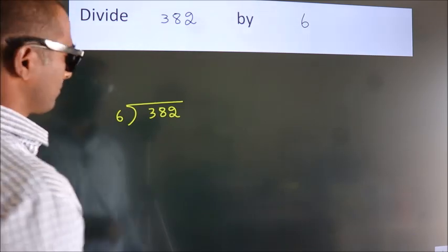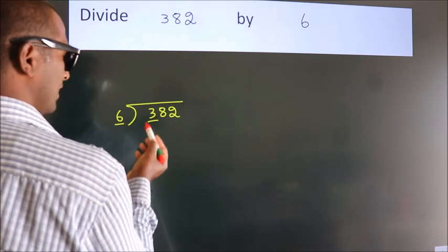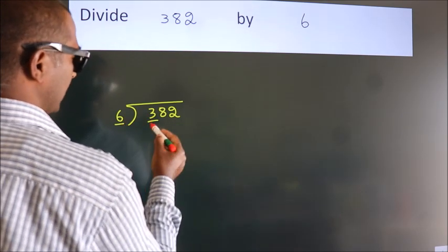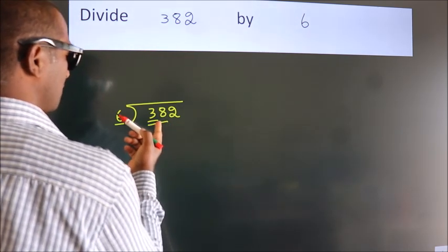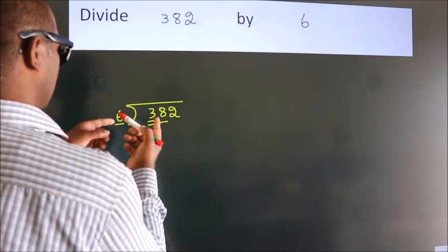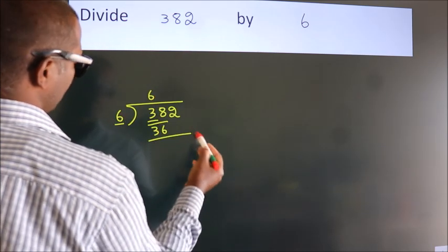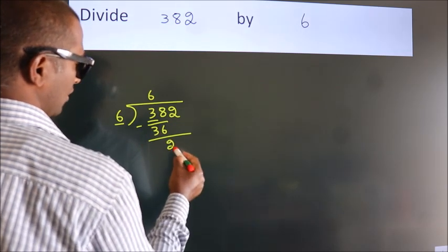Next, here we have 3, here 6. 3 is smaller than 6, so we should take 2 numbers: 38. A number close to 38 in the 6 table is 6×6, 36. Now we subtract and get 2.